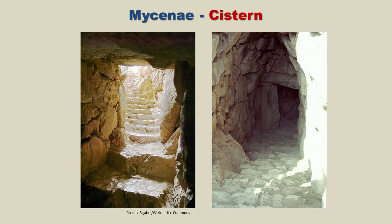The forces at Mycenae had access to water through a tunnel built to an underground source within the stronghold. This was very important because if you were under siege, you would not be cut off from your water supply. You might survive several weeks or even months without food, but losing your water supply could force a surrender within just days. You can see in these two photos the entrance leading down to the source of water.